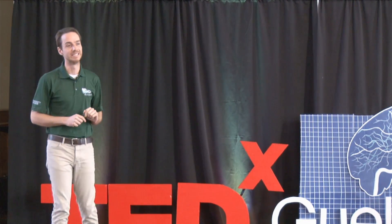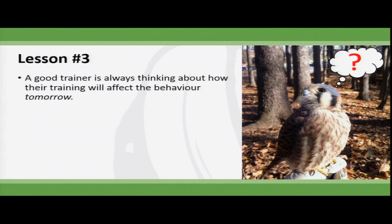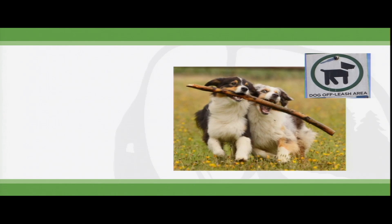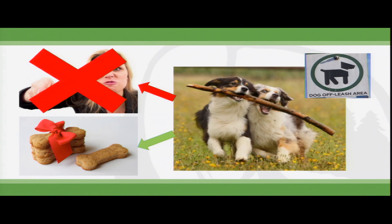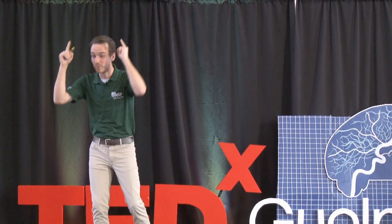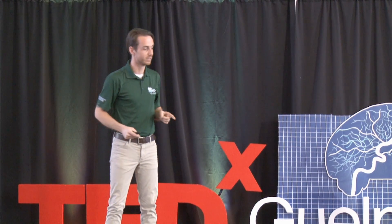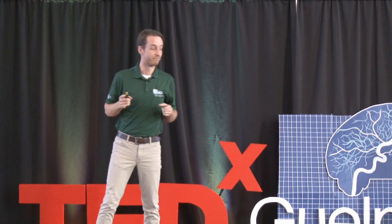Lesson number three: a good trainer is always thinking about how their training will affect the behavior tomorrow. Training is a process. A great example: at an off-leash dog park, you'll see dogs running free, and some infuriated owner screaming at their dog to come back. Why would the dog go back to that? Instead of yelling, you need to make coming back more rewarding. When the animal finally does come back, even if it takes forever, praise it and give it treats — because tomorrow it's going to remember that.